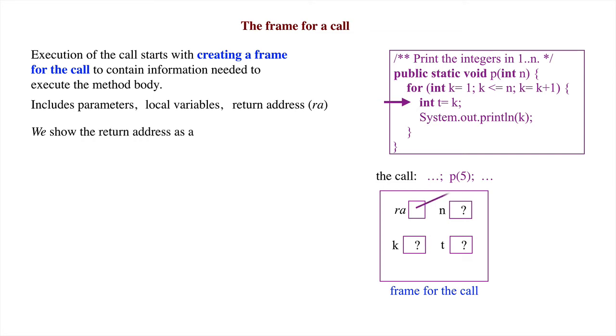We show the return address as a pointer, named r a, to just after the call. That's how we show it when we are executing a call. The computer may do it differently when it is executing a call.